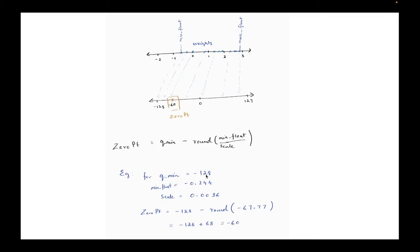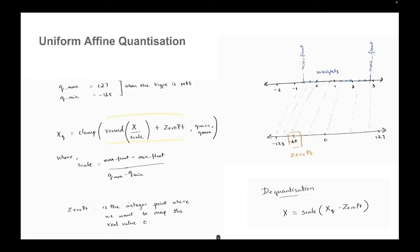So if you take this example, it will be more clear. Well, let's say qmin is minus 128. Min float, let's say is minus 0.244. Scale is 0.0036. We have zero point computed as follows. This value min float divided by scale gives you this quantity, which is a negative number. So that negative sign comes up as an addition here. And when you round it off, it becomes 68. So essentially what we get is an integer as the zero point. So this zero is mapped to minus 68. So now that we understand how this zero point is calculated and why it was necessary, we can come back to this transformation function.